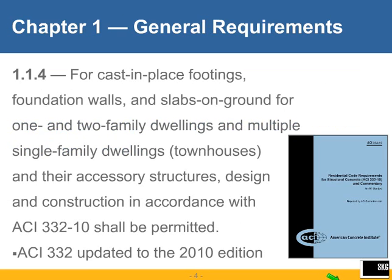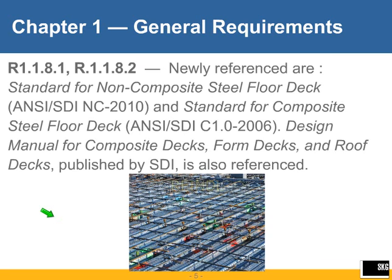The first change we are looking at: ACI 318 allows cast-in-place footings, foundation walls, and slabs on grade for one- and two-family dwellings and townhouses to be designed by ACI 332, the so-called residential code, rather than ACI 318. In 318.08, the reference was to ACI 332.04; that has been updated to ACI 332 dated 2010. So this is an updating of the reference document.